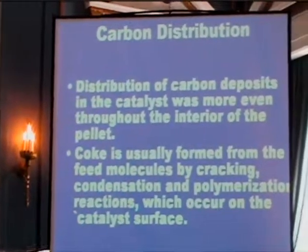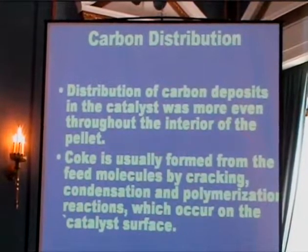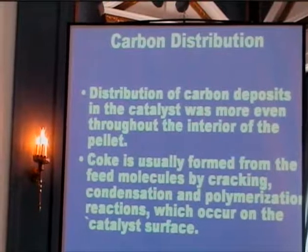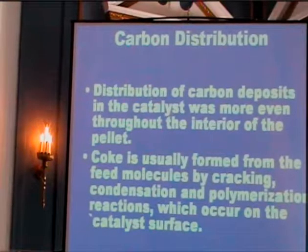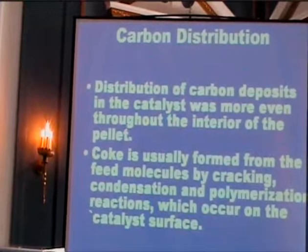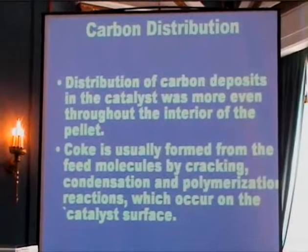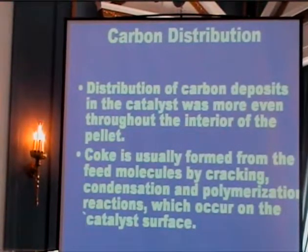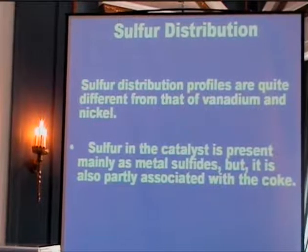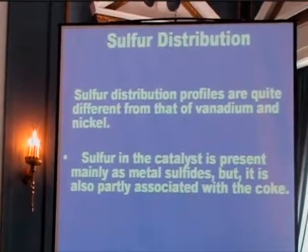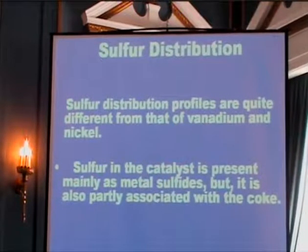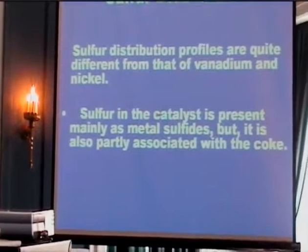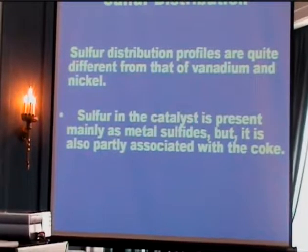We also tried to get information about the carbon distribution. The distribution of carbon was found to be uniform throughout the interior of the catalyst. Coke is usually formed from feed molecules by cracking, condensation, and polymerization reactions occurring on the metal surface. With regard to sulfur distribution, it is quite different from that of vanadium and nickel. Sulfur in the catalyst is present mainly as metal sulfide, but it is also partially associated with the coke.